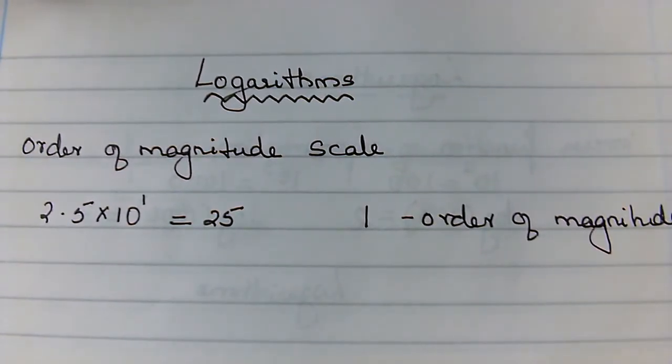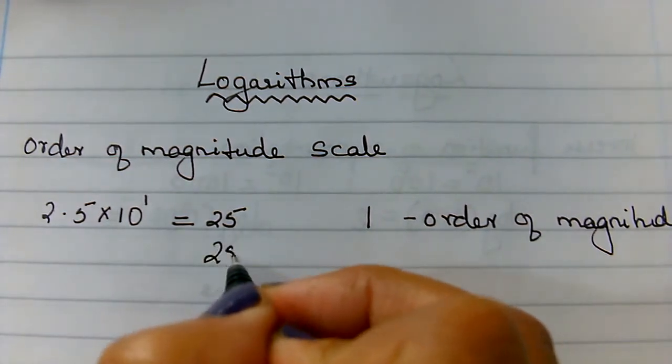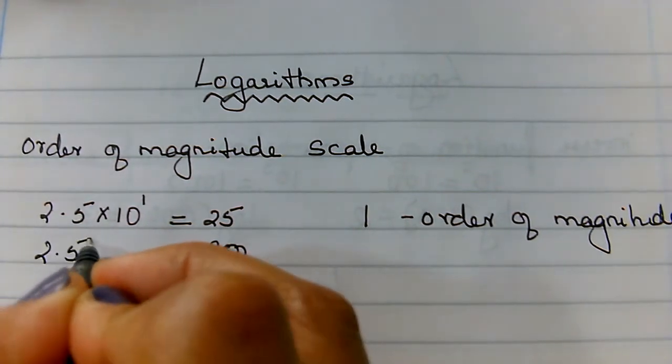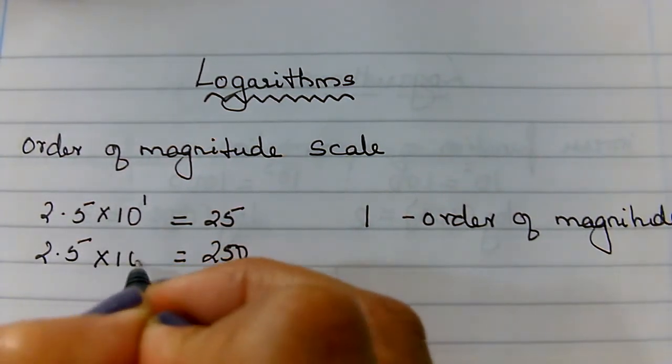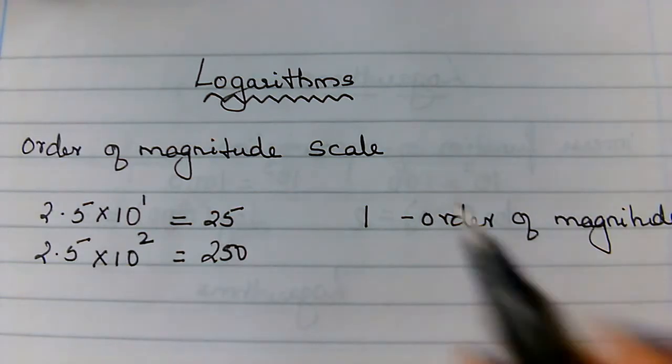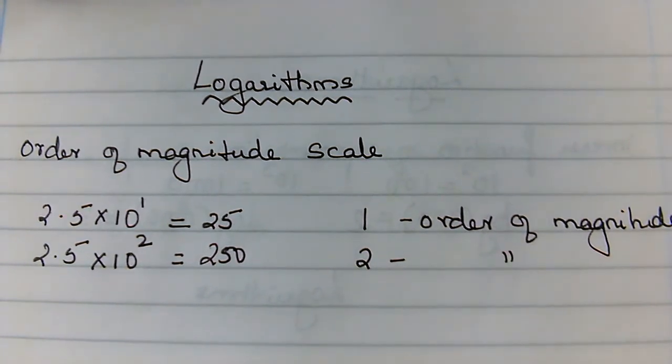Then, if I go for another number, let me go for say 250, which in standard form is 2.5 times 10 to the power 2. So what will be the order of magnitude there? The order of magnitude is going to be 2. So this is what we mean by order of magnitude.